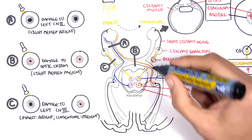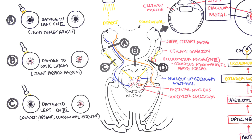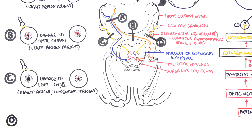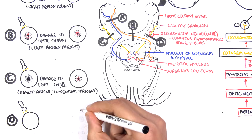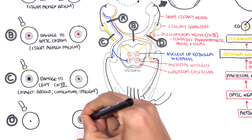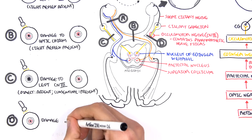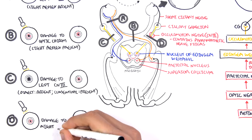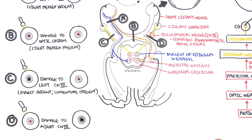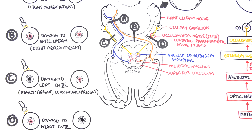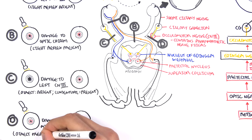What happens if you have a lesion on the right oculomotor nerve? Similarly, when you shine light on the left eye, information is still received by the midbrain and the Edinger-Westphal nucleus, and the oculomotor nerve sends the signal for pupils to constrict. However, the right oculomotor nerve is not working and so it can't tell the right pupil to constrict. Thus, damage to the right oculomotor nerve results in the direct response on the left being present, but the consensual response being absent.